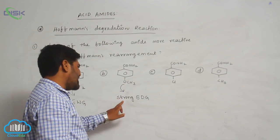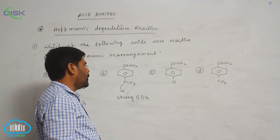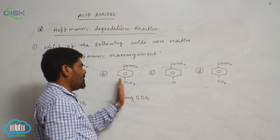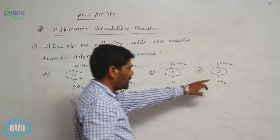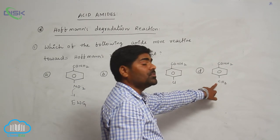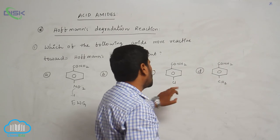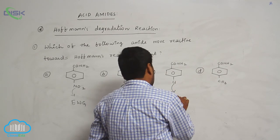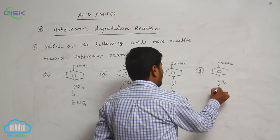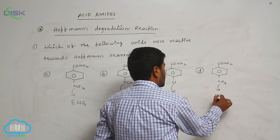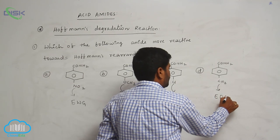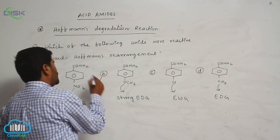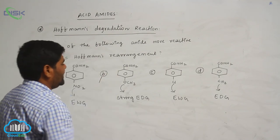The OCH3 group acts as a stronger electron-donating group, so the rate of formation of the amine increases in that case when compared to a chloro or methyl group. Chloro can act as either electron-withdrawing or electron-donating, but OCH3 is a stronger electron-releasing group, so the rate of formation of amine increases.